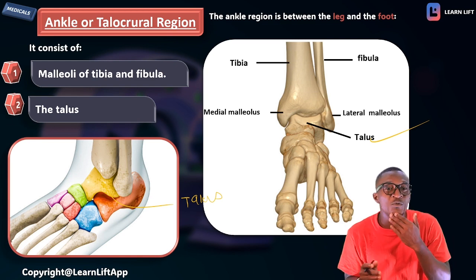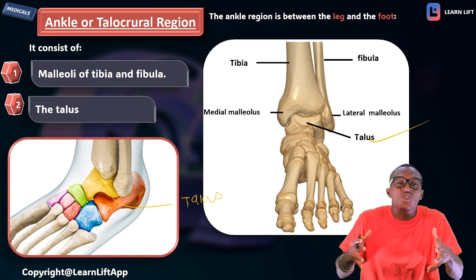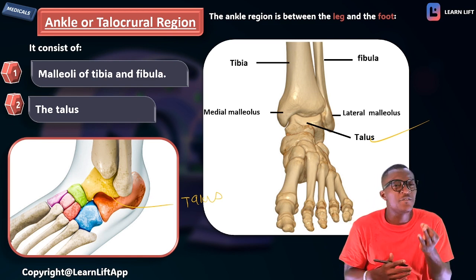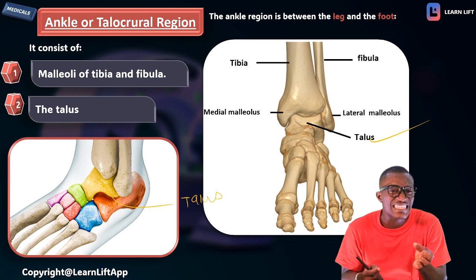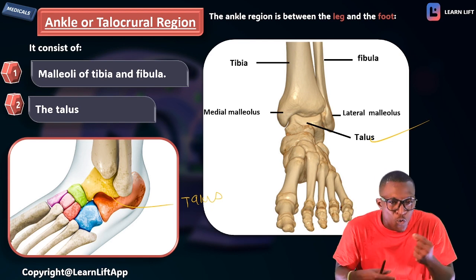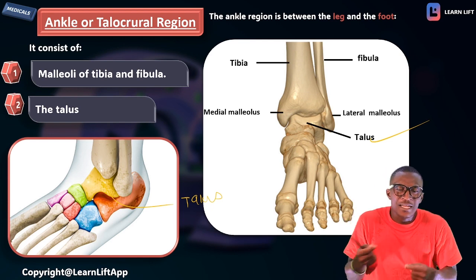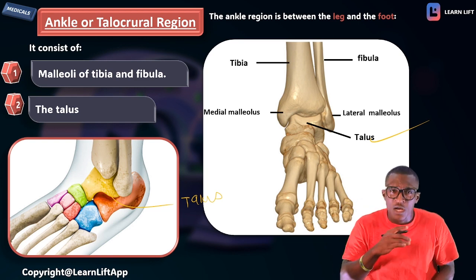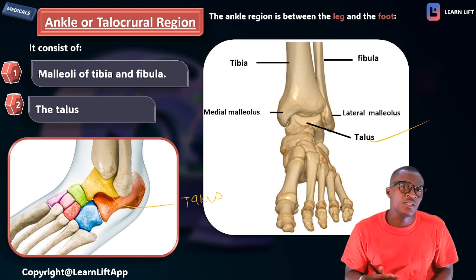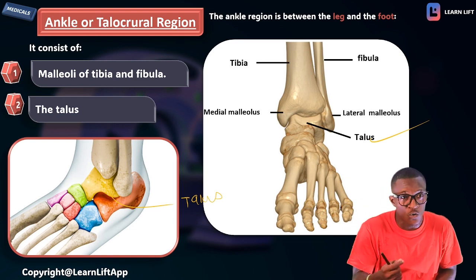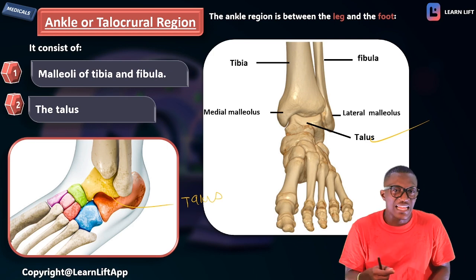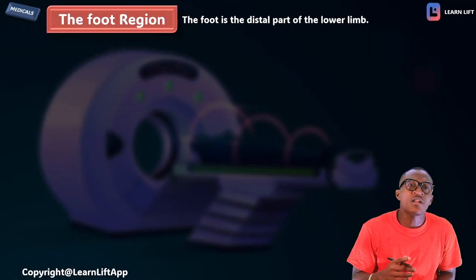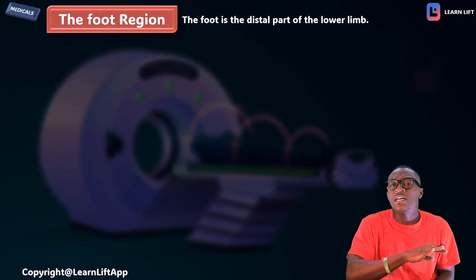The talus bone is right there — the two bones of the leg are sitting on the talus. What forms the ankle region? The malleolus of the tibia, the malleolus of the fibula, and the talus bone.